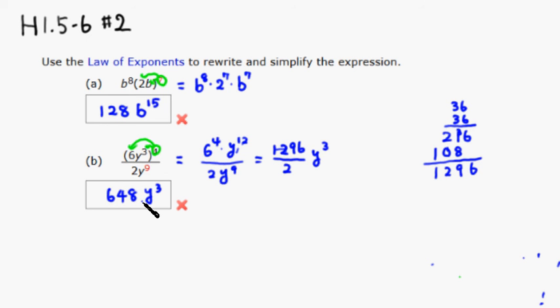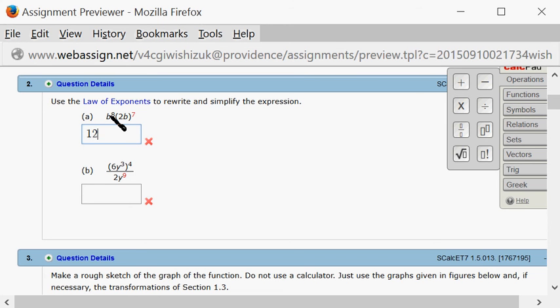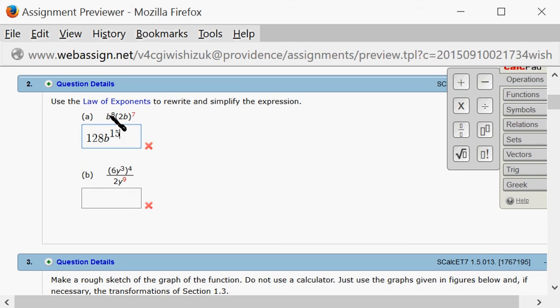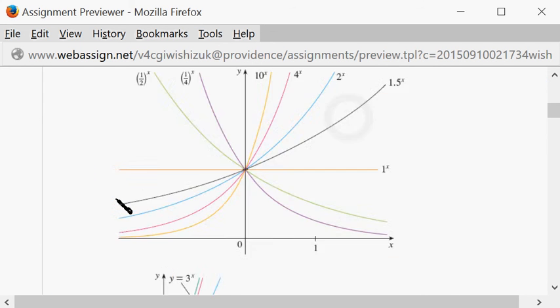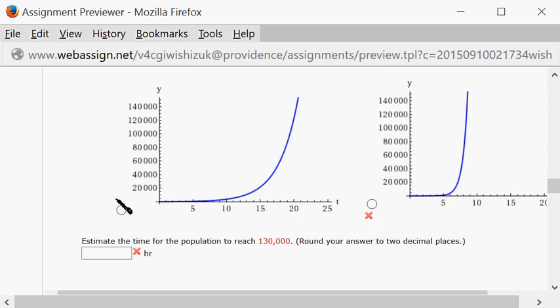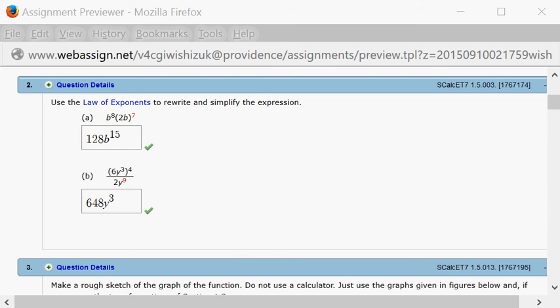So let's type it in. Part A was 128b to the 15th power, and b is 648y cubed. Let's check the answer. Submit for testing. I came back, and it looks like we got both of these guys correctly.